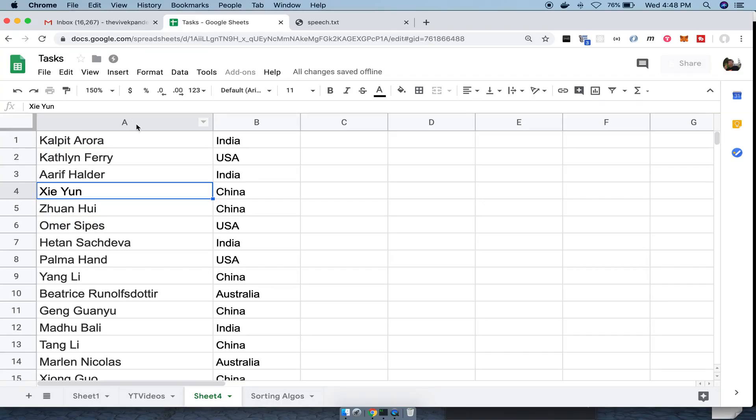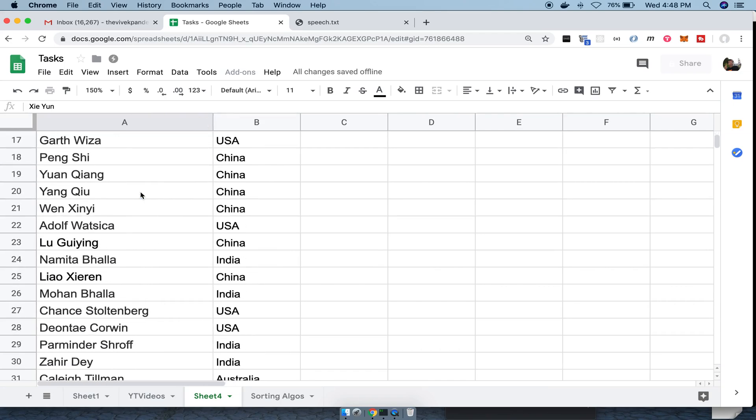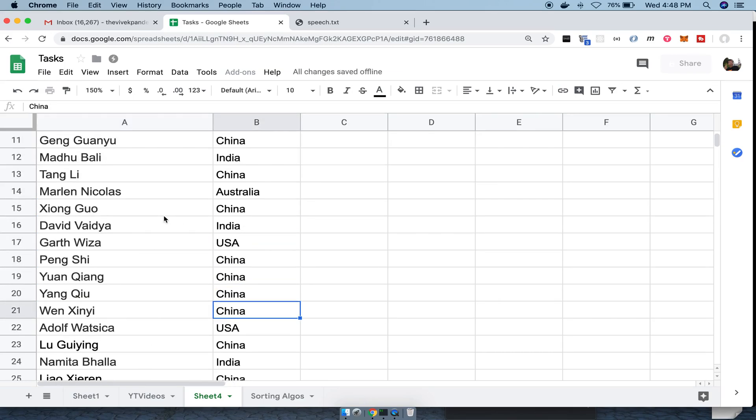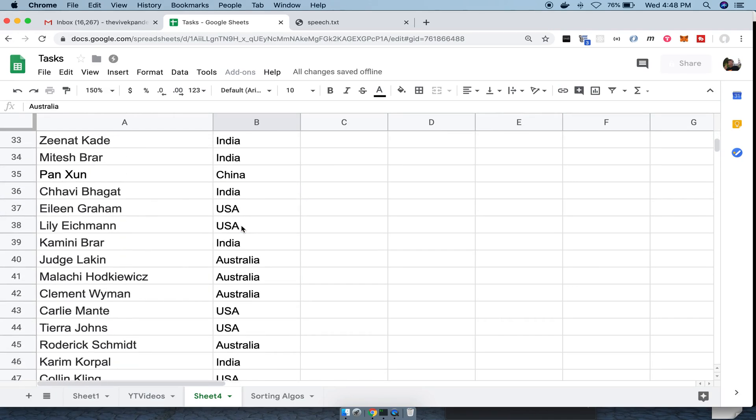Or let's consider another example. Say there is an Excel sheet containing names and countries of students. The first column contains the names of students and the second column contains their countries. As you can see there are a bunch of Indians, a bunch of Chinese, a bunch of Americans and some Australians in this list.